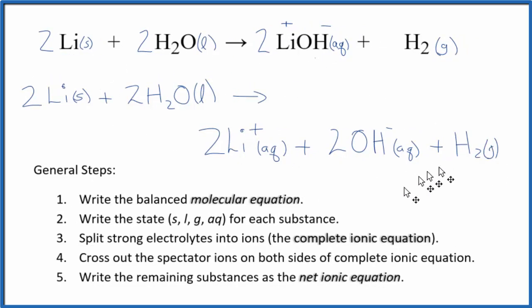And this is both the complete ionic equation and the net ionic equation because there's no spectator ions that we can cross out. Nothing is the same on either side. We have lithium solid here, but here it's an ion. We can't cross that out. Here we have two water molecules as a liquid, but now we have this OH-, which is aqueous, the hydroxide ion, and then hydrogen gas.